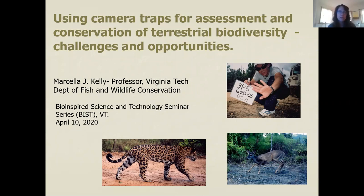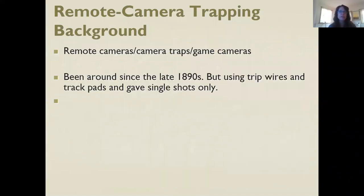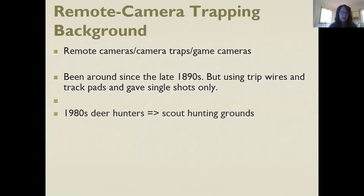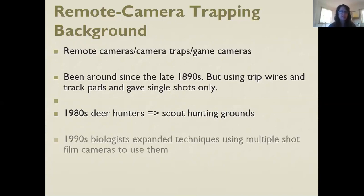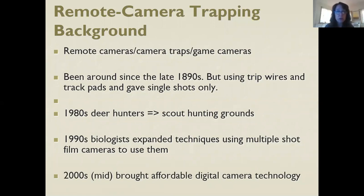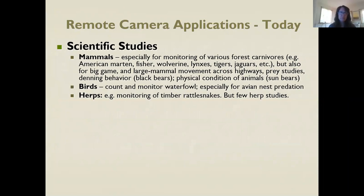Camera traps have been around since the 1890s using trip wires and track pads. It wasn't until the 1980s when deer hunters started using them for scouting hunting grounds, and then in the 90s biologists started using remotely triggered cameras for biological purposes. Cameras only started to become digital in the mid to late 2000s, so it's relatively new technology.